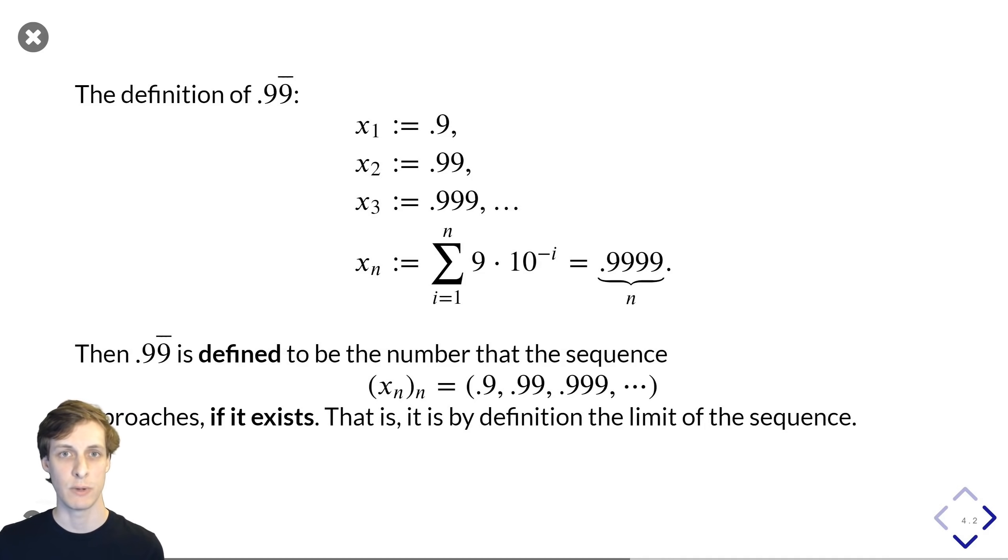We start by defining a sequence. The first element of the sequence is 0.9, then 0.99, then 0.999, and so on, where the nth term in the sequence is just point followed by n nines.